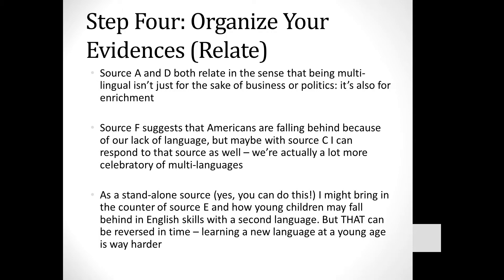Step four: find relationships between evidences — otherwise you're not synthesizing. Sources A and D both discuss how multilingualism isn't just for business or politics but also for enrichment — combine those for one body paragraph. Source F suggests Americans are falling behind, but Source C says we're actually more multilingual than we think, so maybe Americans have nothing to fear. For a counter paragraph, the chart about five-year-olds can be flipped: those kids will likely have mastered English and have a second language by age 10 or 13 — ahead of their peers.